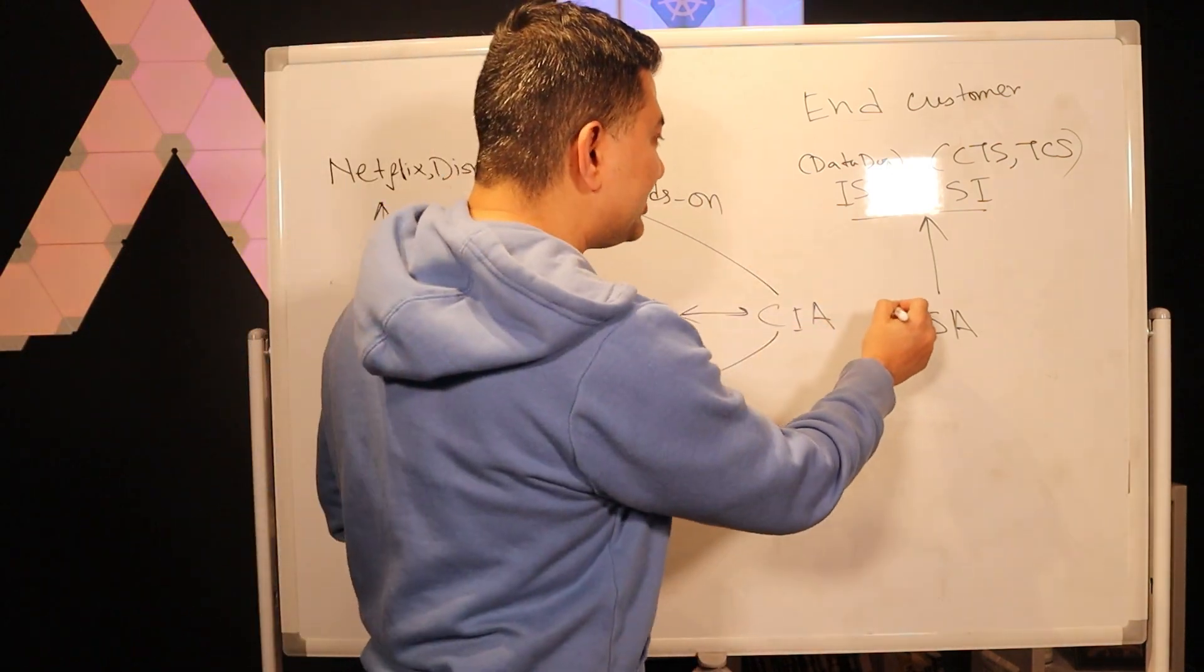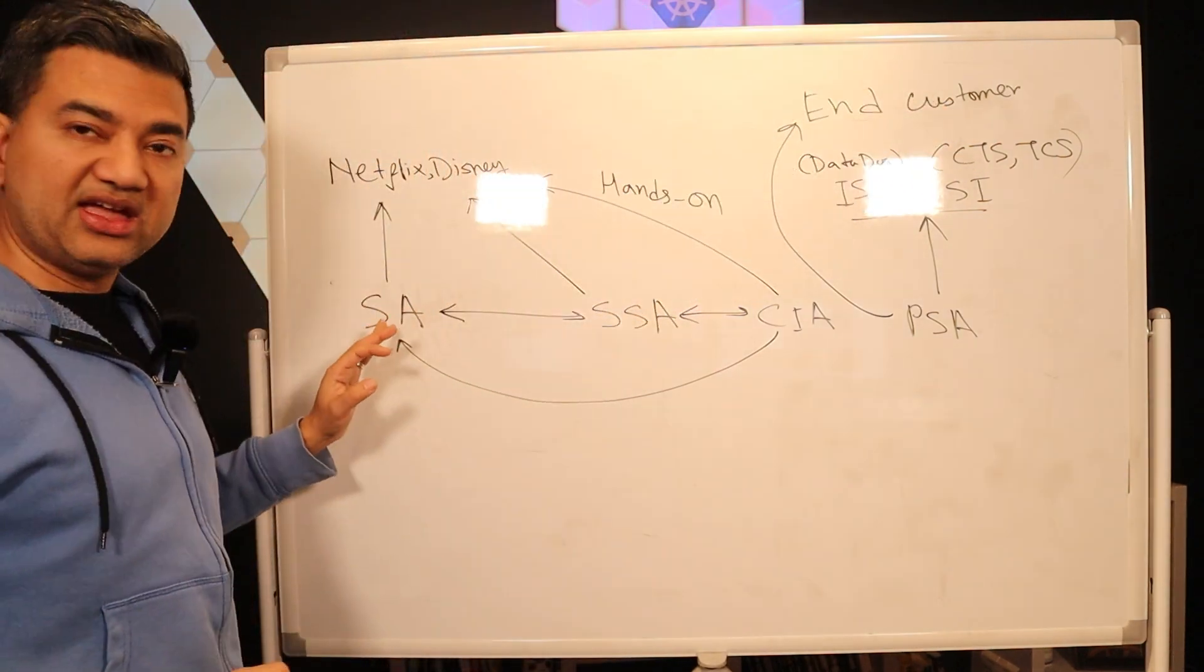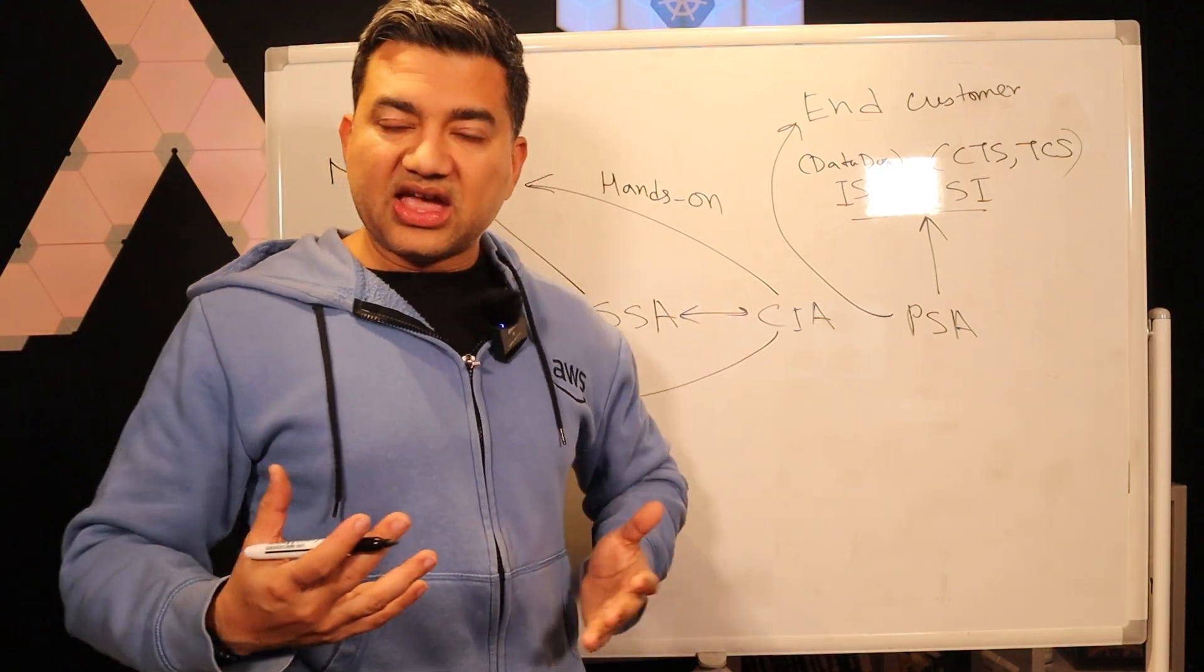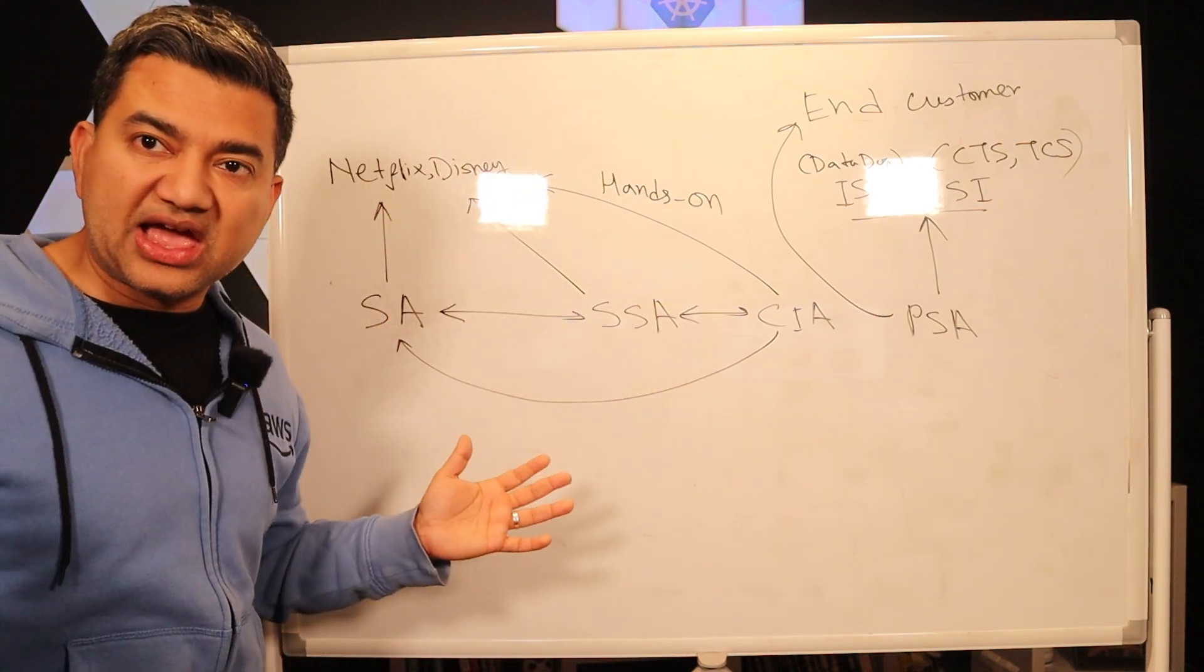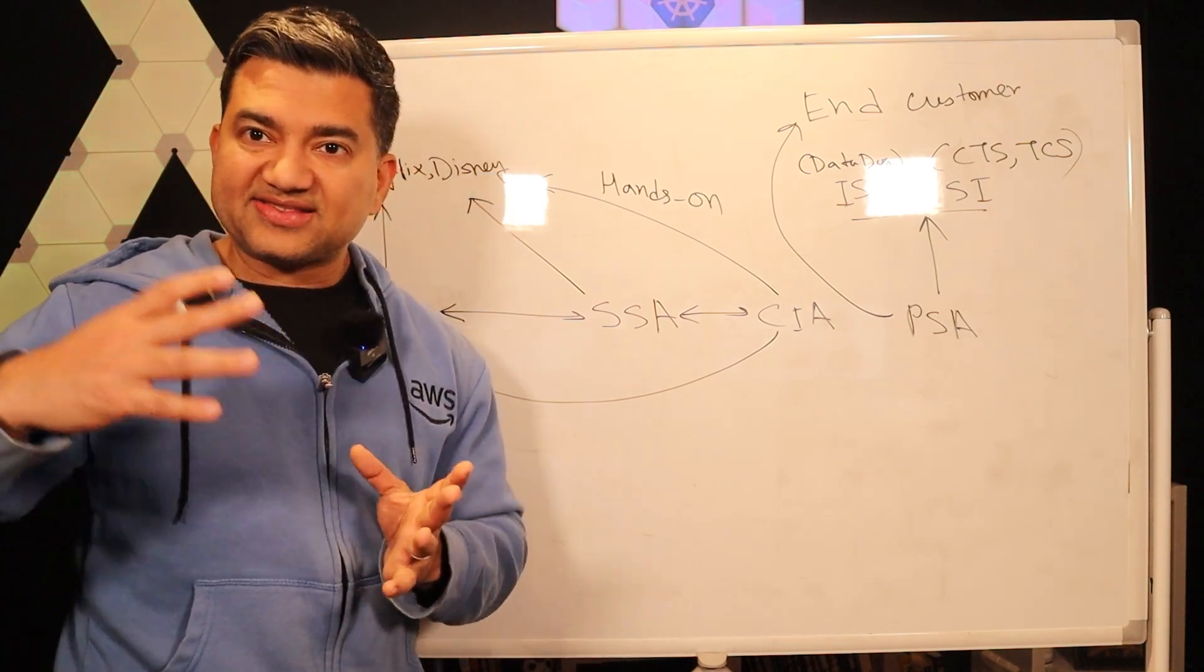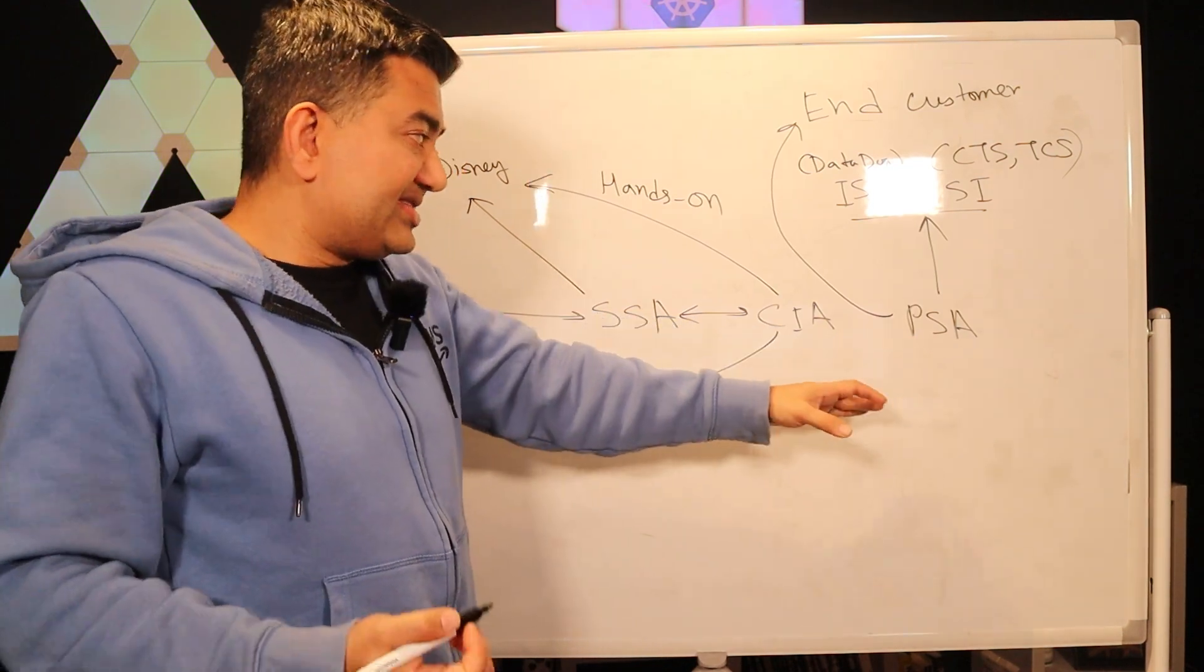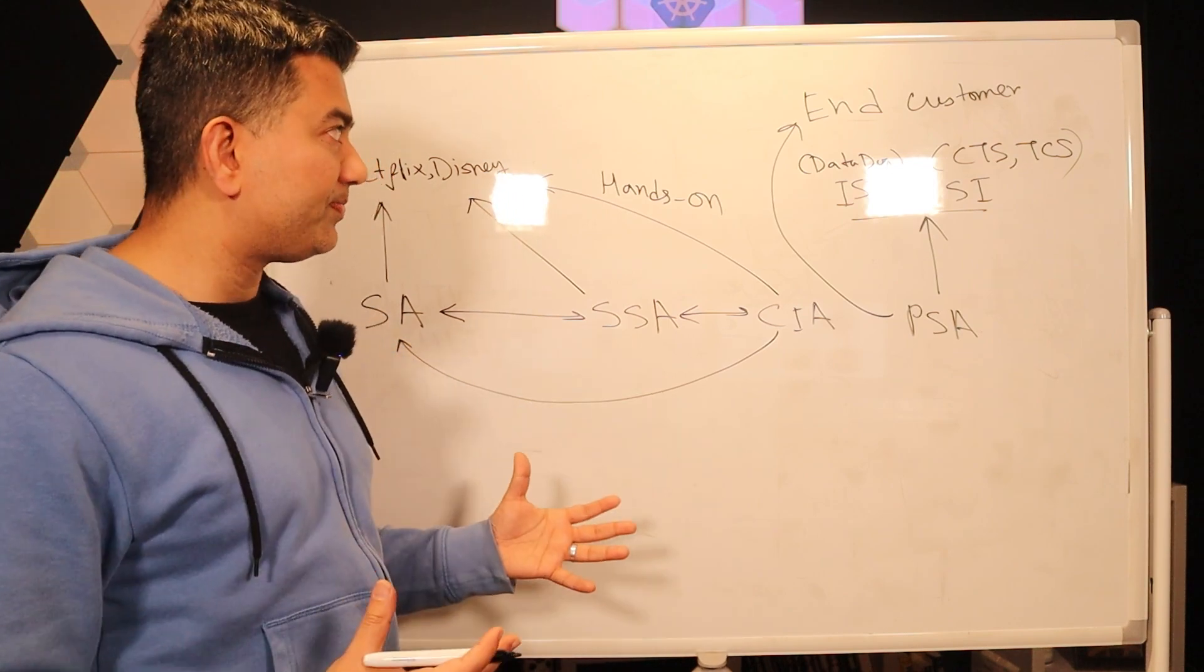And sometimes these Partner SAs can jump on a call with the end customer with the Account SA or Specialist SA. So let's say customer is using Splunk and the Account SA really needs someone who knows ins and outs of Splunk, knows how Splunk works under the hood, because maybe the customer is pushing Splunk to its limits, how can they optimize it, etc. So they will engage the Partner SA. And sometimes Partner SA may engage Specialist SA depending on the scenario.